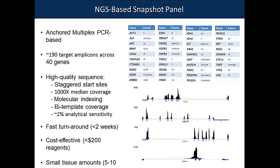So we developed a smaller focused panel called Snapshot NGS or a Snapshot Replacement Assay — a homebrew LDT using a technique called Anchored Multiplex PCR developed by Zhang Li Zhang in my post-doc. It allows us to look at about 40 genes with very high-quality sequence. It can be done quickly and cost-effectively for less than $200 with 5 to 10 nanograms of input material.